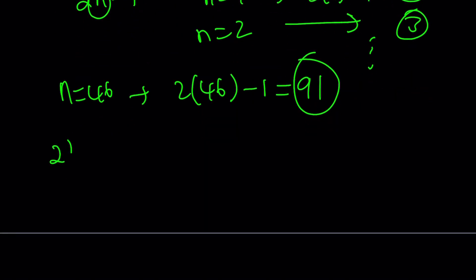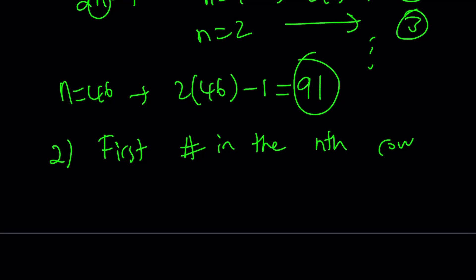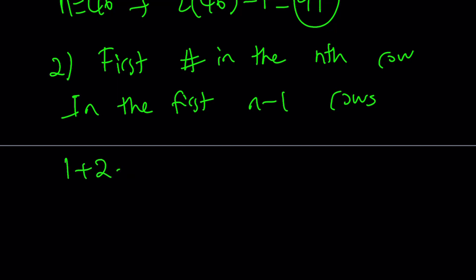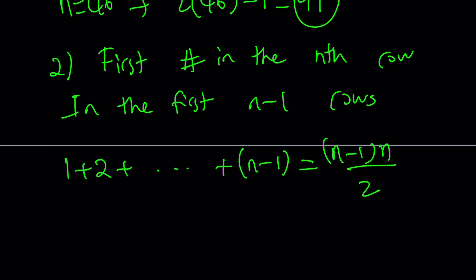The answer to the first question — what is the first number in the 10th row — is 91. Now let's look at the second problem, which is a little harder because it's more general. What is the first number in the nth row? We're going to think similarly. The 10th row required us to look at the first 9 rows, so now we're going to look at the first n minus 1 rows. In those first n minus 1 rows, how many numbers are there? It's 1 plus 2 plus ... plus (n minus 1), and this sum equals (n minus 1) times n divided by 2.